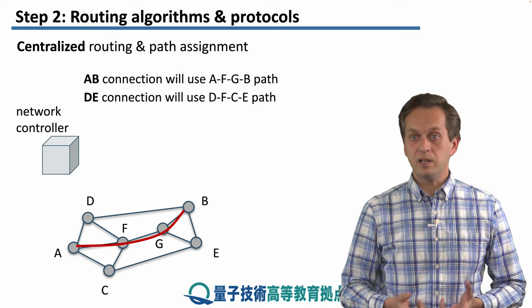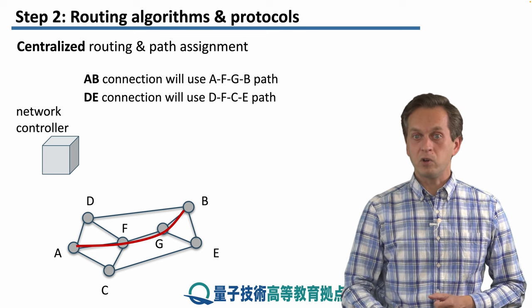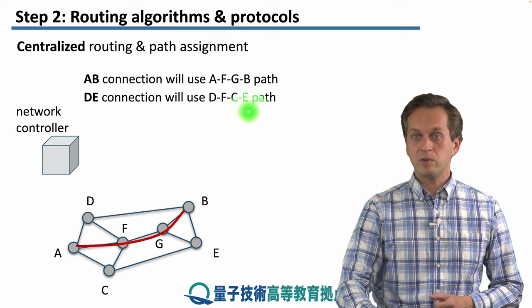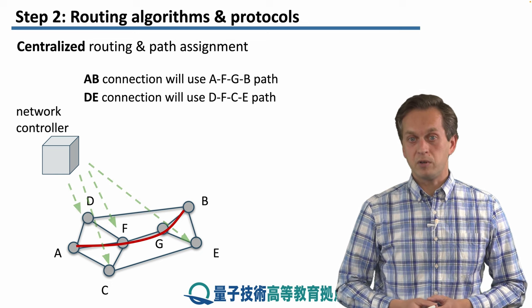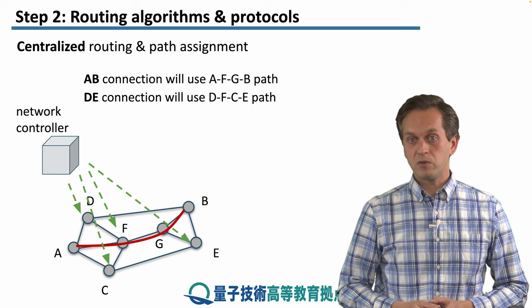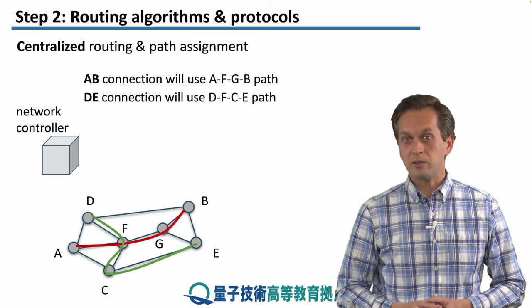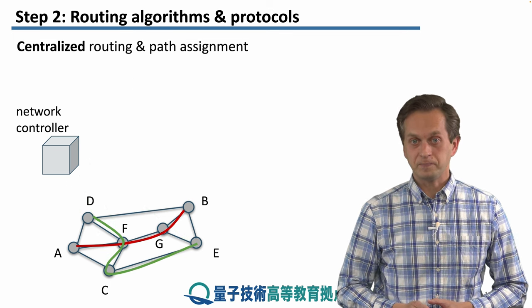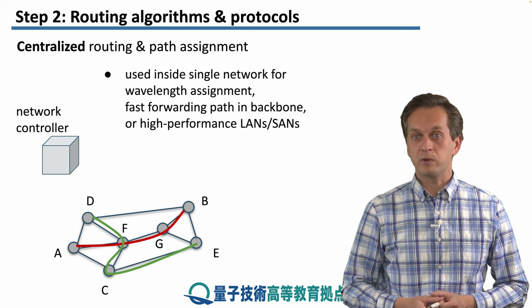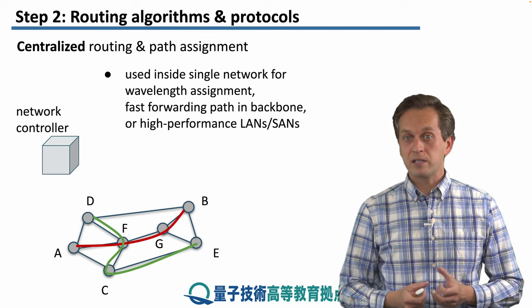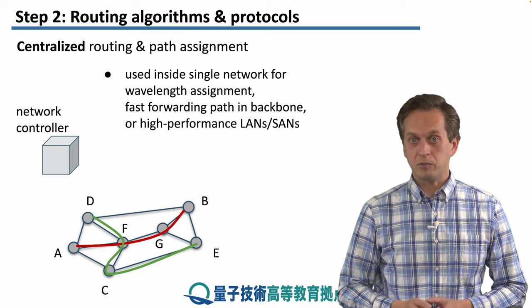Similarly, if D and E are trying to establish an end-to-end entangled connection, the network controller computes the best choice: D, F, C, E — and distributes the corresponding instructions to these nodes so they can achieve the task of establishing end-to-end entanglement between D and E. Such an approach is suitable for single small networks, wavelength assignment, path forwarding in backbone or high-performance local area networks, and system area networks.